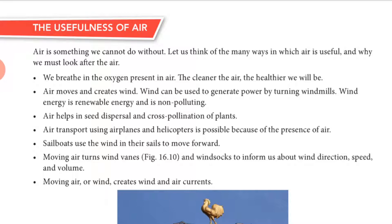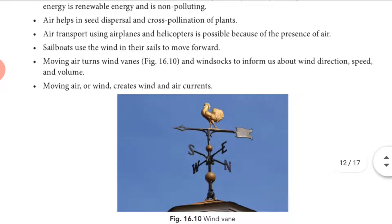Moving air shows the direction of wind and its volume, measured by wind socks and wind bands. When air moves it creates wind currents, and air currents are helpful in bringing rainfall.